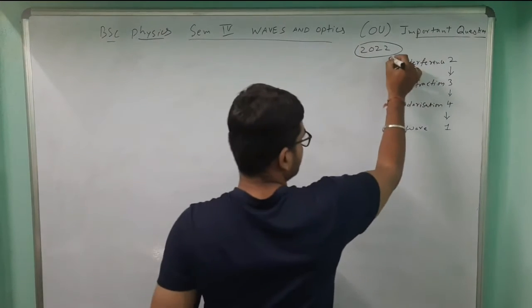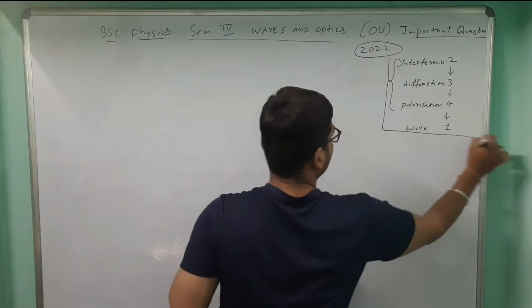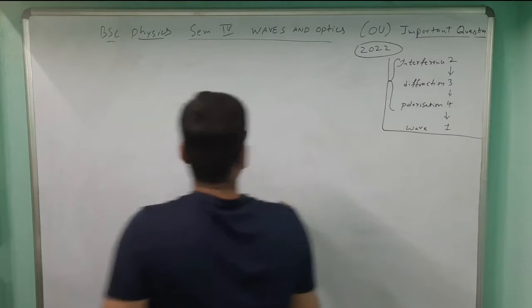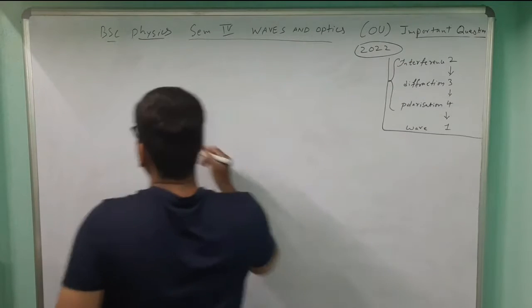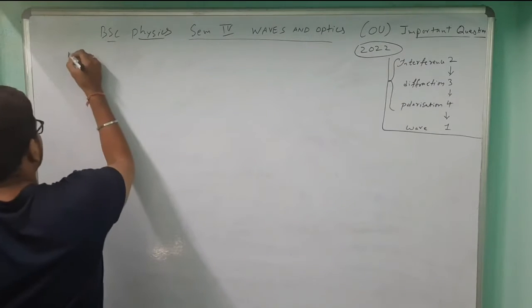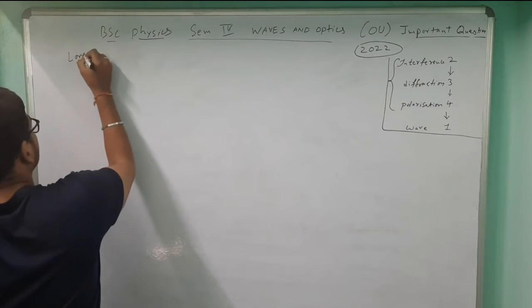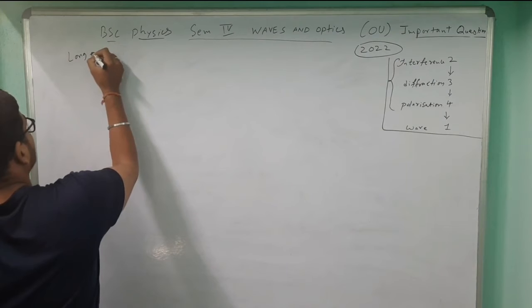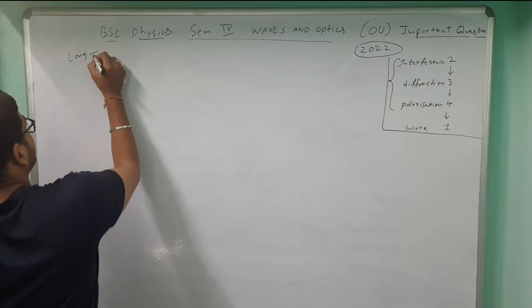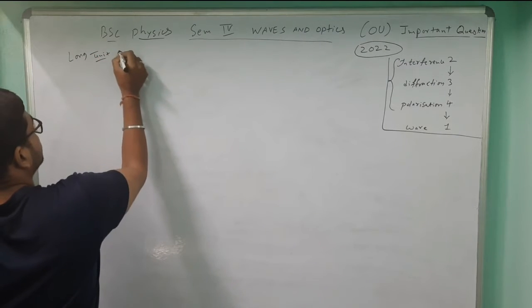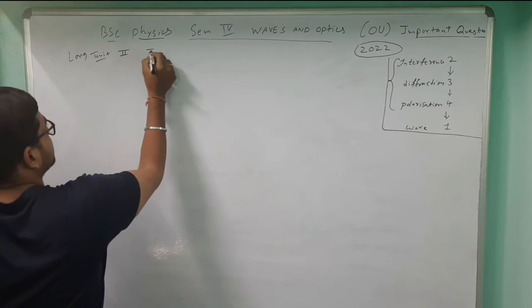First, we want to know the long answer questions for unit two, and that unit is Interference.